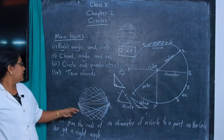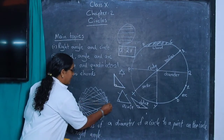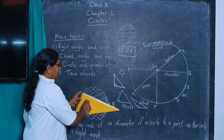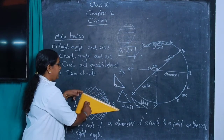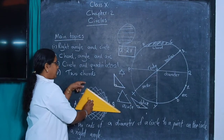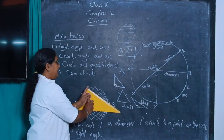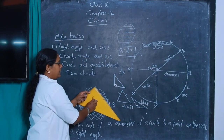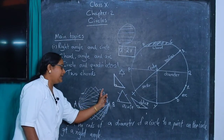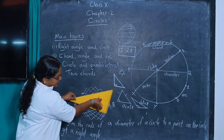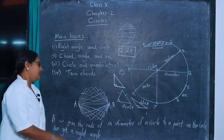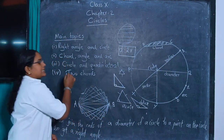Using a set square, draw a line AB. From both ends A and B, draw two lines at 90 degrees using the set square. Draw more 90-degree lines from the ends of the diameter at various points. Join all these 90-degree points and we get a circle.